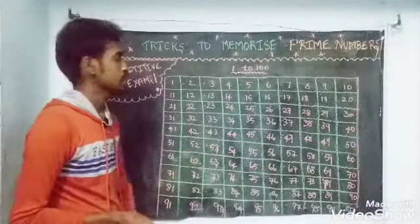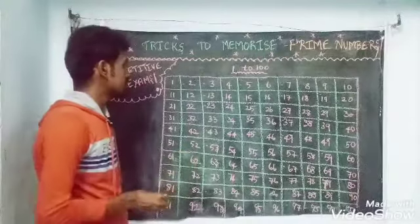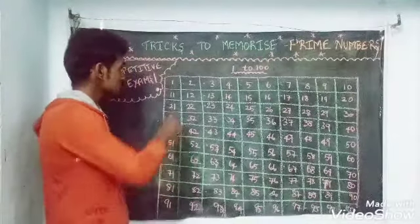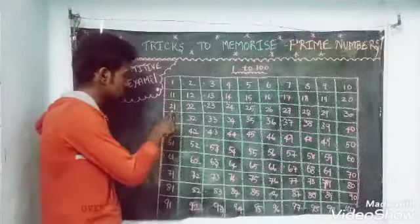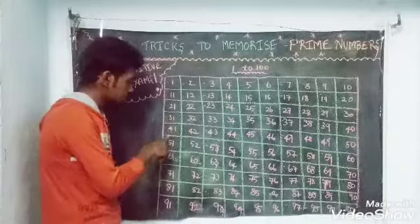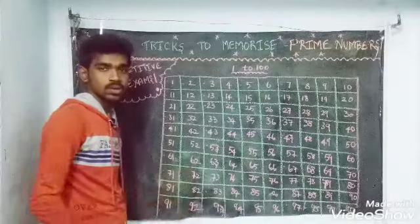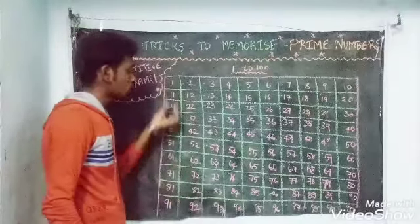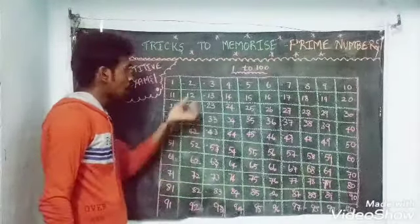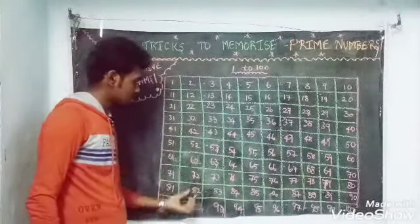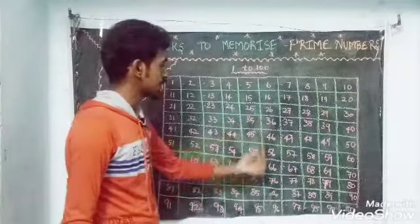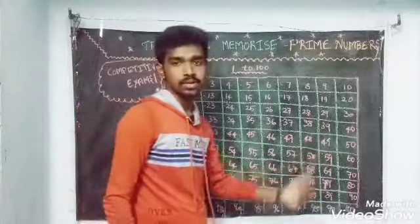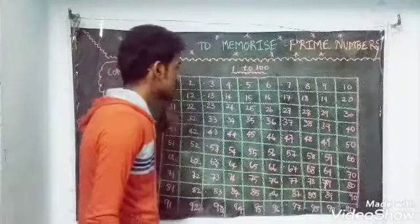So let's see. First, we set up numbers: 1, 11, 21, 31, 41 — going up to 91, all the way to 100. So here, this is the starting point.